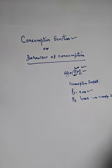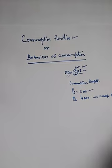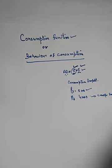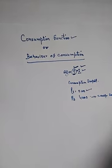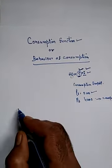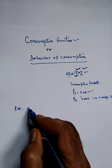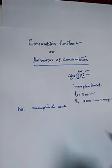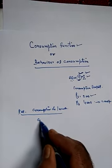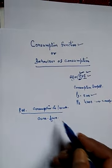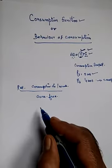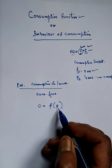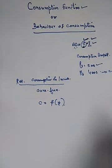Consumption expenditure mainly depends on income. The relation between consumption and income is called the consumption function. C is our consumption, Y is income — consumption is a function of income.